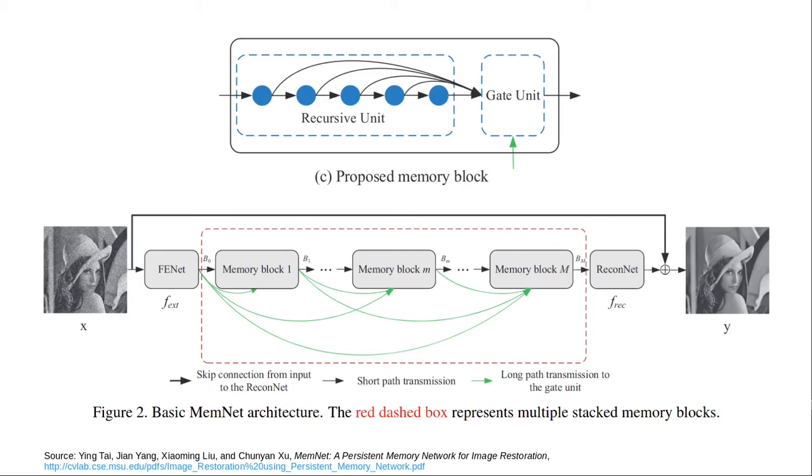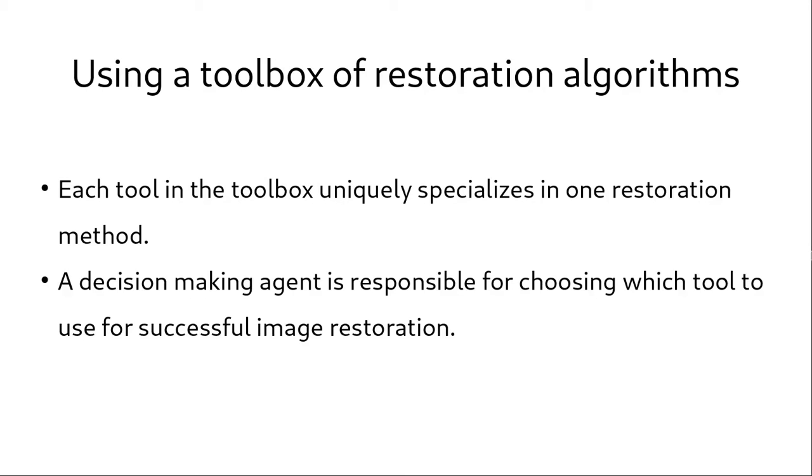This is one example of a deep neural network that can address multiple distortions at once. The drawback of using deep CNNs for restoring images that underwent multiple distortions is that they are computationally intensive. So what if we can use a toolbox of specialized small CNNs that can intelligently pick appropriate CNNs from a toolbox to successfully restore the image.